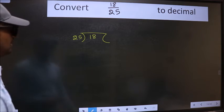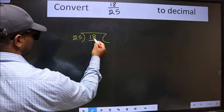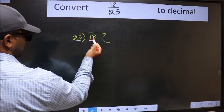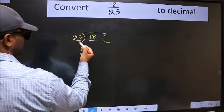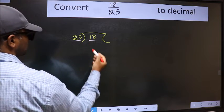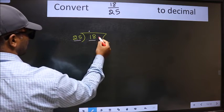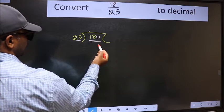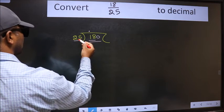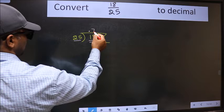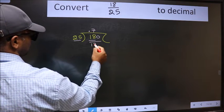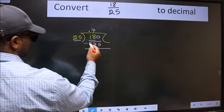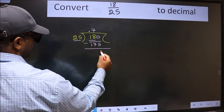Next. Here we have 18 and here 25. 18 is smaller than 25, so what we should do is we should put a dot and take 0. So 180. A number close to 180 in the 25 times table is 25 sevens, which is 175. Now we should subtract — we get 5.